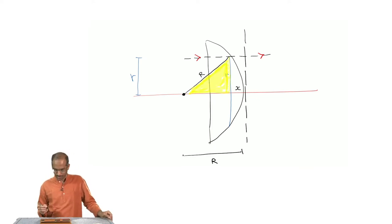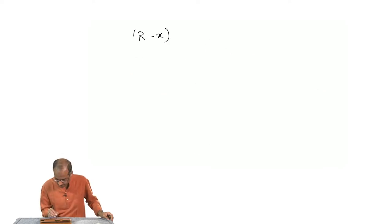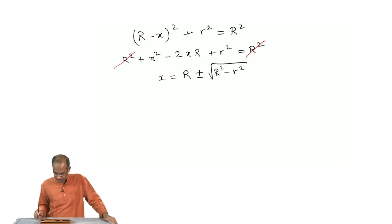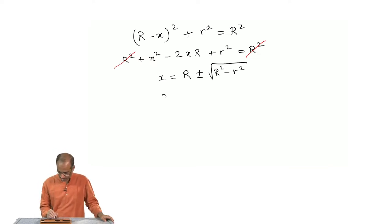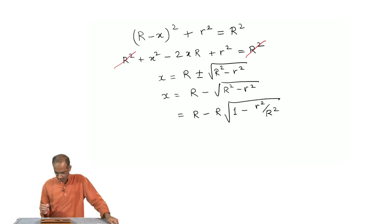From the geometry of this figure you can use Pythagoras theorem to write the following equation: R minus x whole square plus small r square is equal to R square. So that is the solution for x. It cannot be a value that is larger than R. Hence, I will take x to be R minus square root of R square minus r square. Now, we make the binomial approximation.